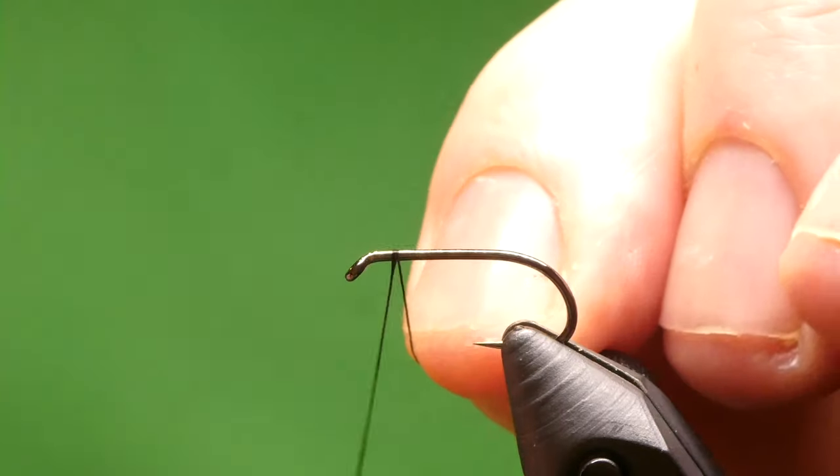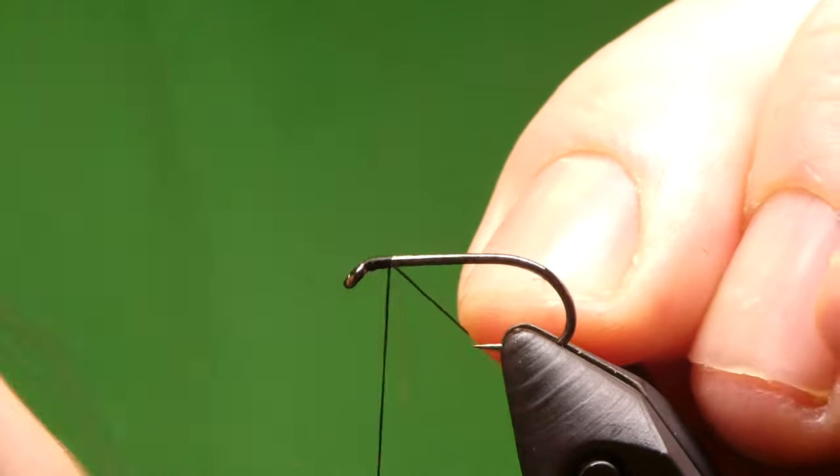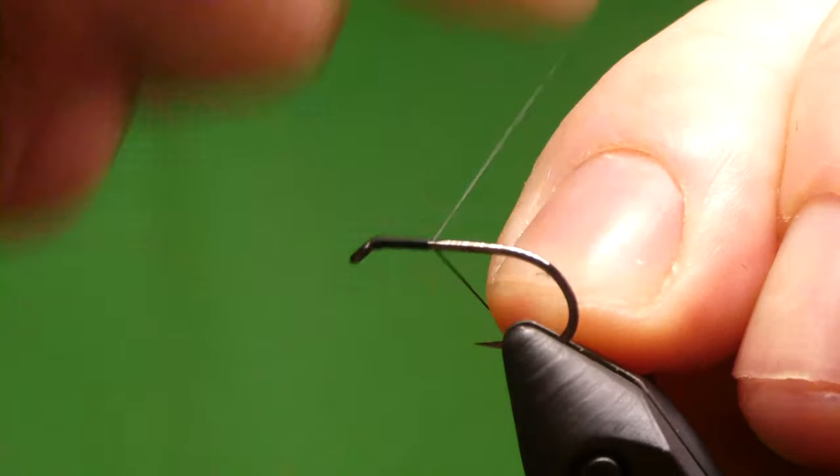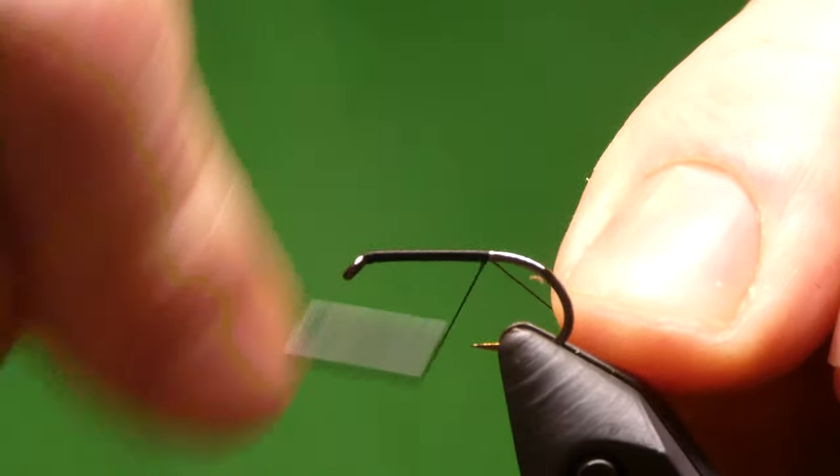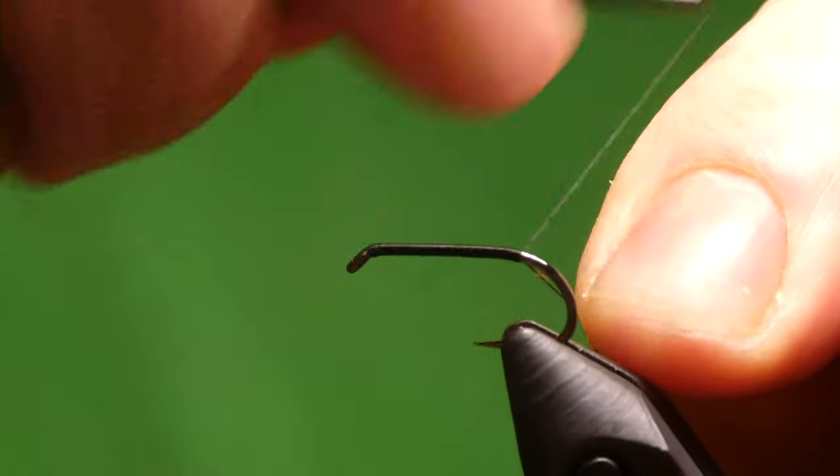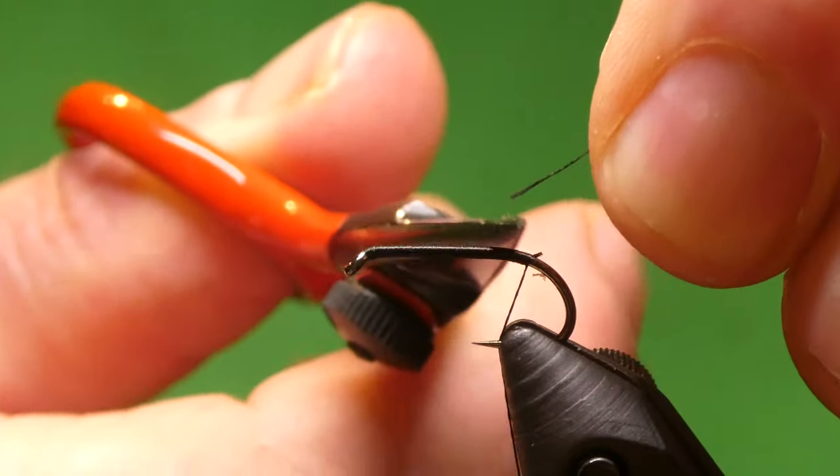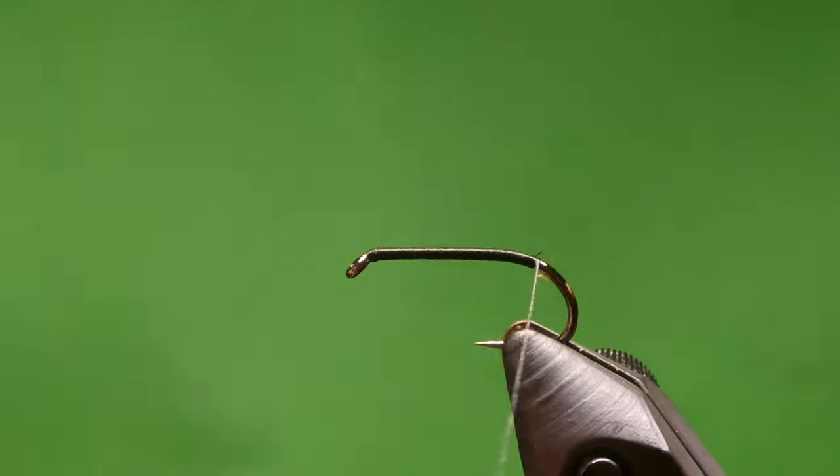So we'll get started. I'll just take the thread down the hook and take this round the bend a wee bit just to make the buzzer a wee bit bigger. Cut off the waste, one more thumb bite down just to get the end in.